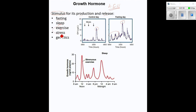Exercise is another stimulus, and exercise and stress kind of go hand in hand — exercise is one form of stress, with multiple other kinds of stress as well. The bottom graph shows the big increase in human growth hormone after falling asleep, but also a big increase following strenuous exercise. Genetics also plays a role: regardless of these other factors, people have different abilities to produce different amounts of human growth hormone, determined strictly by what you are born with.